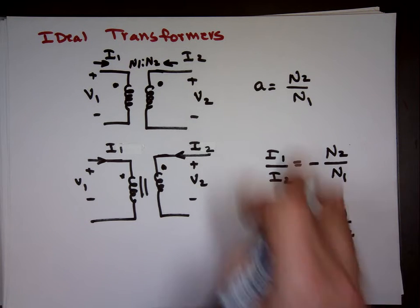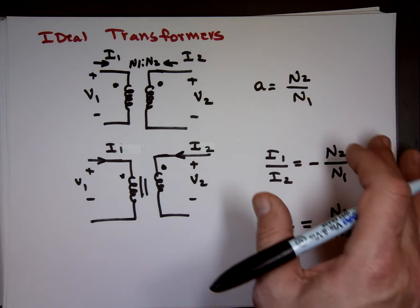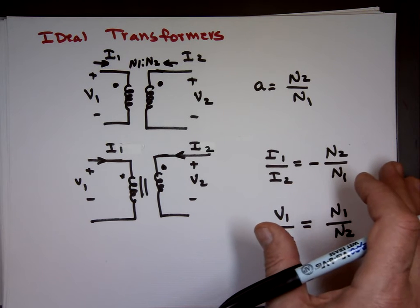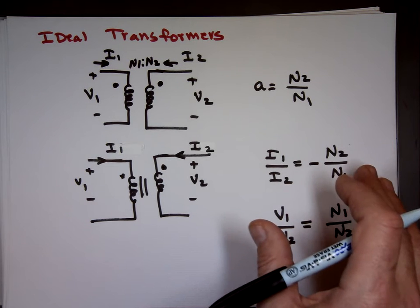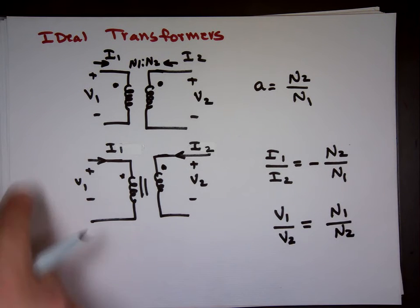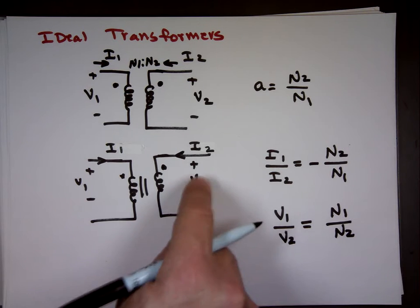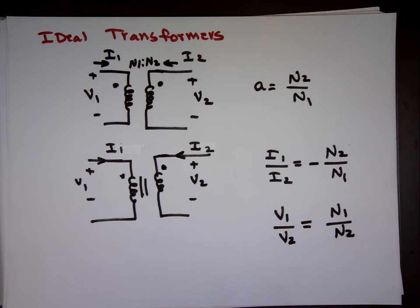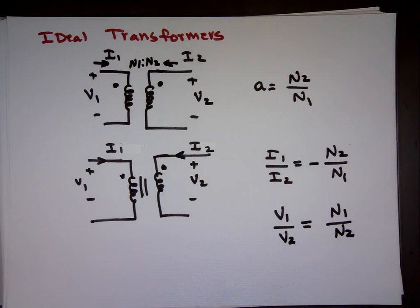These two transformer equations give us two equations with two unknowns. We get the other two equations by applying KVL on the left loop and KVL on the right loop, giving four equations with four unknowns to solve.